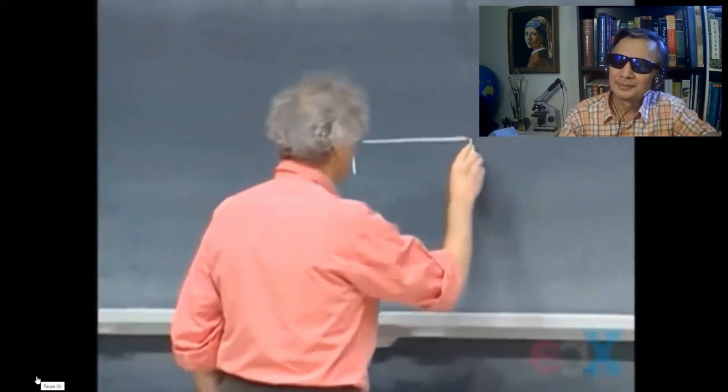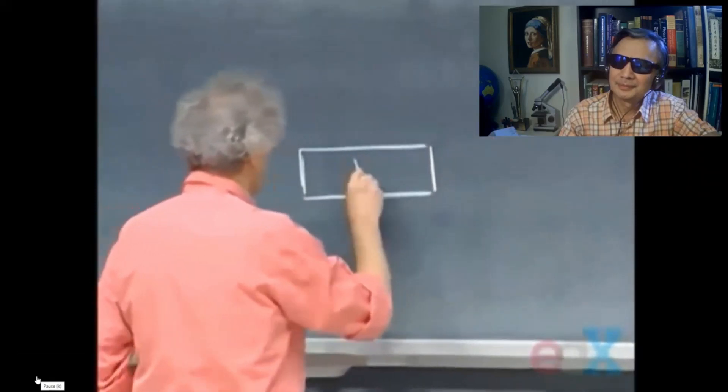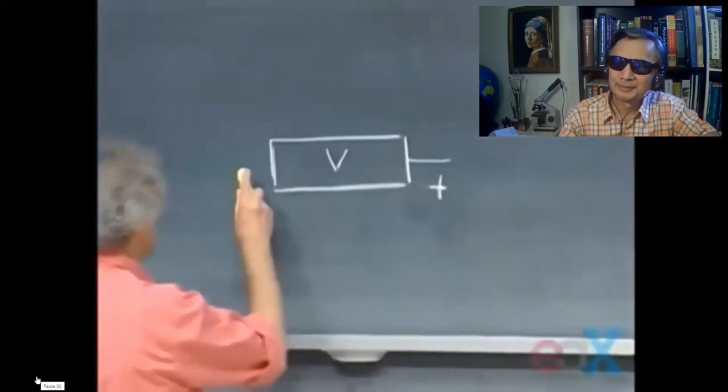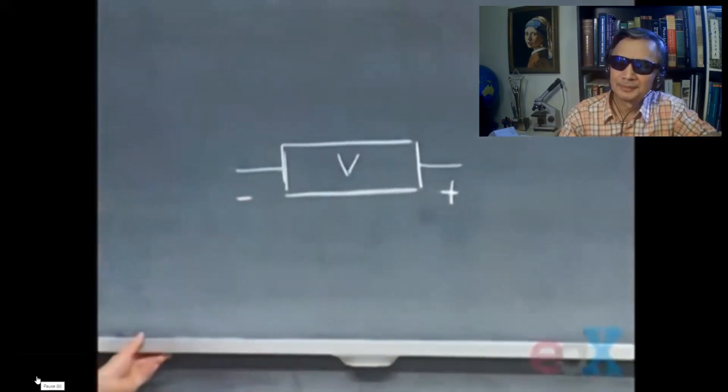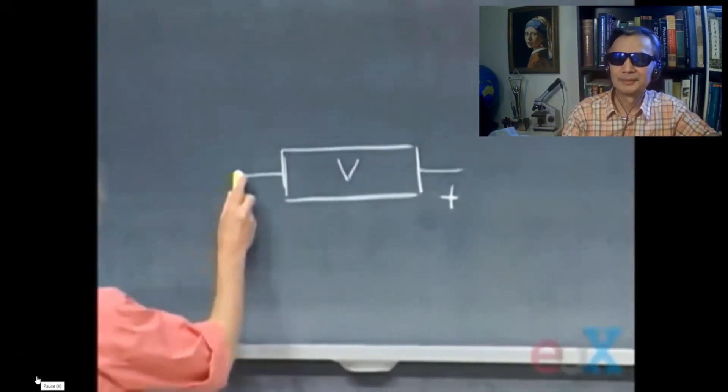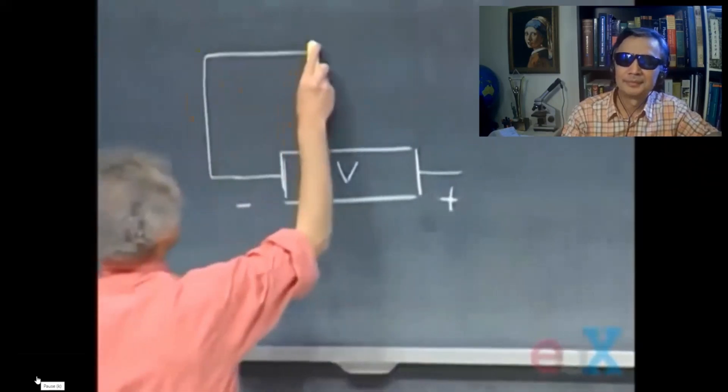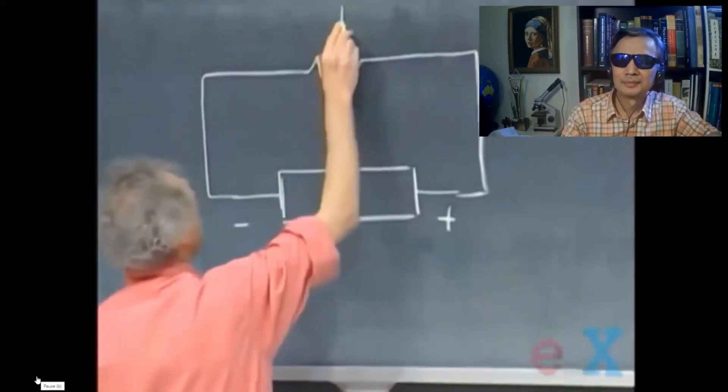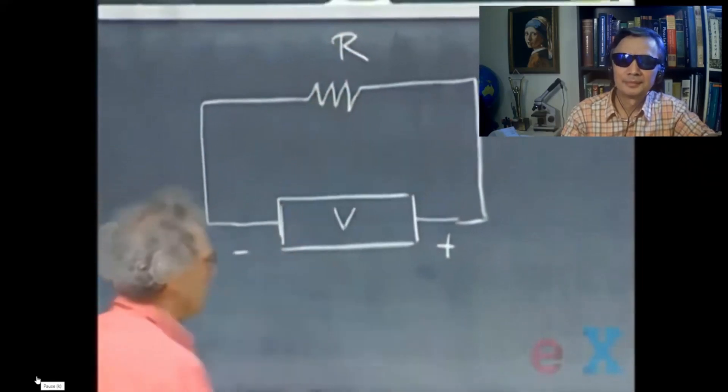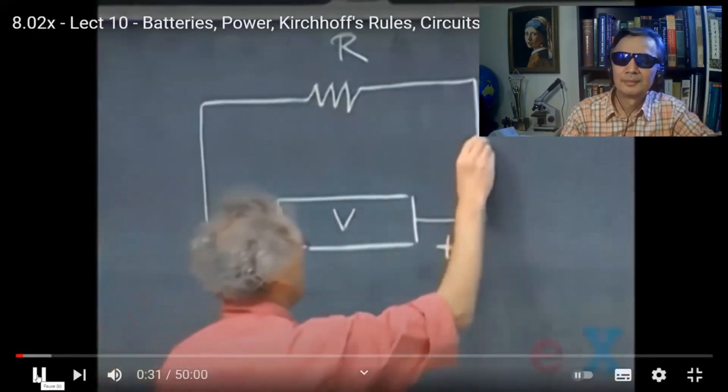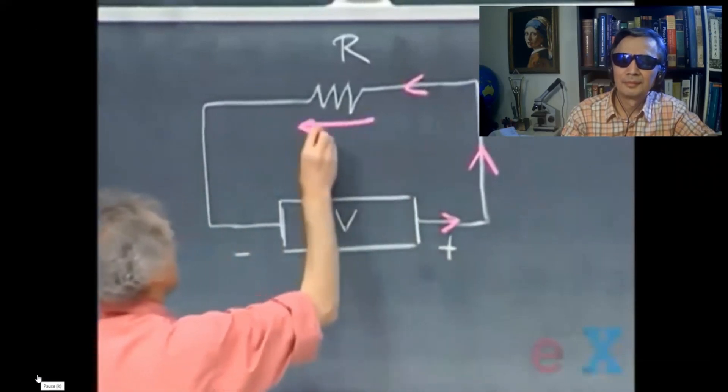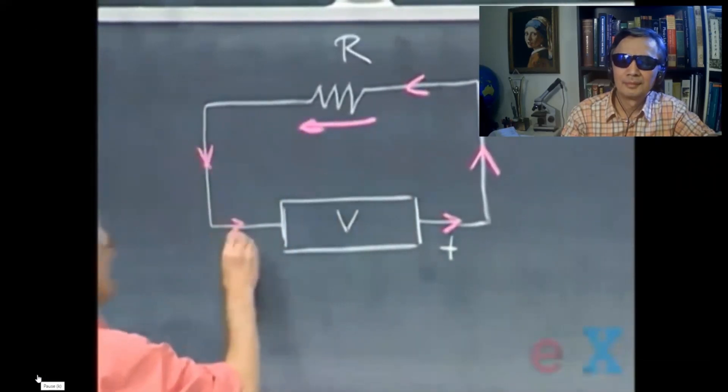Here we have such a power supply. Potential difference. He's talking about the battery. This will be the plus side, and this will be the minus side. Okay, I'm going to connect this. I have a resistor here, R, and as a result of this, the current will start to flow in this direction.